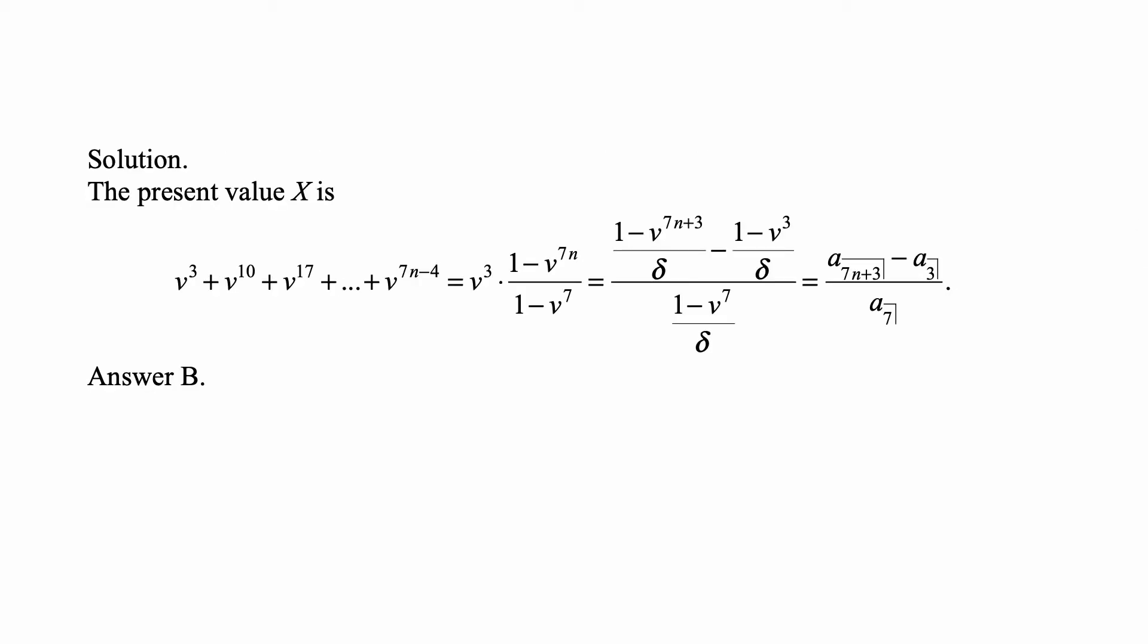And here's the solution. Well, we just write out what the payments are in terms of present value. And the last one will be v to the 7n minus 4.